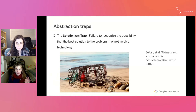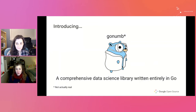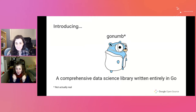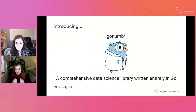To tie together the concepts of creating useful metrics and abstraction traps, we'd like to walk you through an example. We have created a fictitious but beautifully illustrated comprehensive data science library written entirely in Go called GoNum — we do want to indicate this is not actually real, but we'd like to talk to you if anybody's interested in creating this. We're eager to get feedback on our new data science library and grow the user base, because as scientists we like to share our work and want other people to use things we've created.